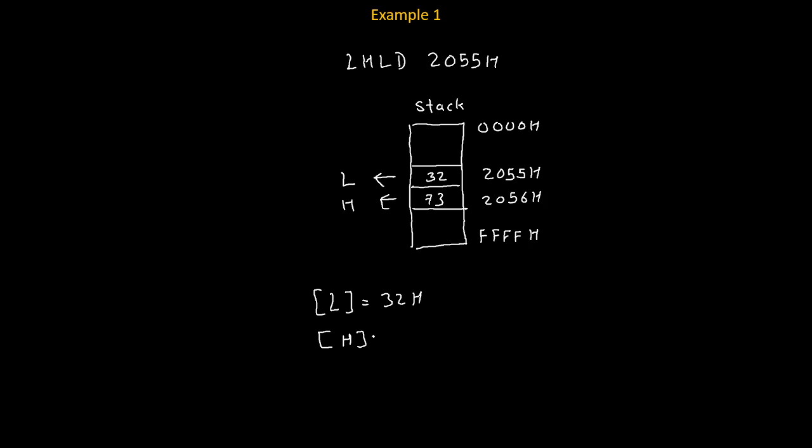So how we will explain format of this instruction. Format means what does our instruction do? What happens exactly in this instruction? The content of given address get copied inside the L register. And the content of next address, next address means address plus 1 get copied to H register.